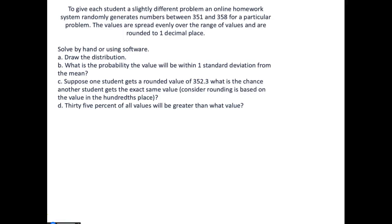To give each student a slightly different problem, an online homework system randomly generates numbers between 351 and 358 for a particular problem. The values are spread evenly over the range of values and are rounded to one decimal place.